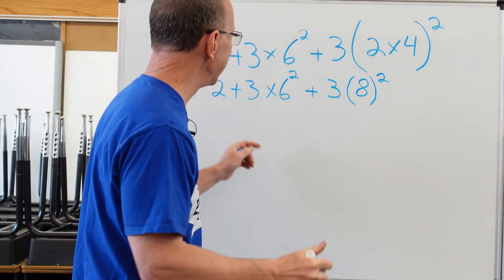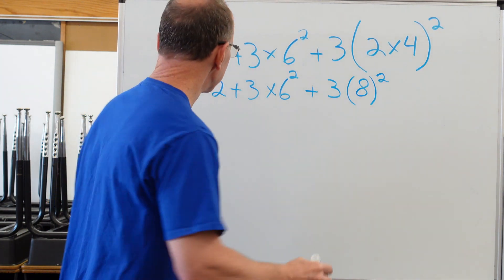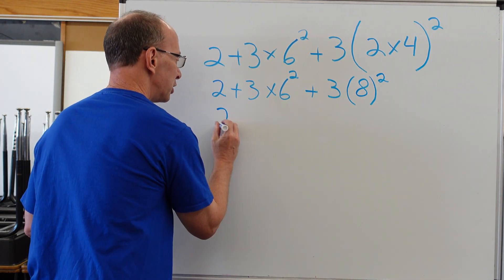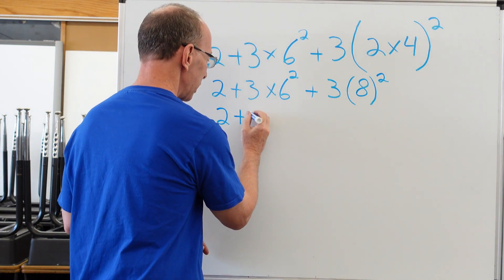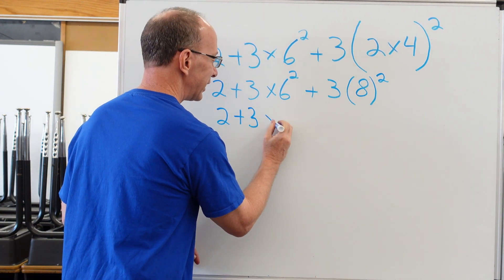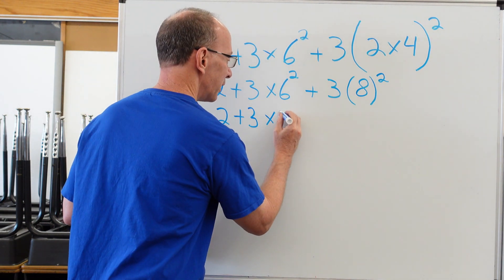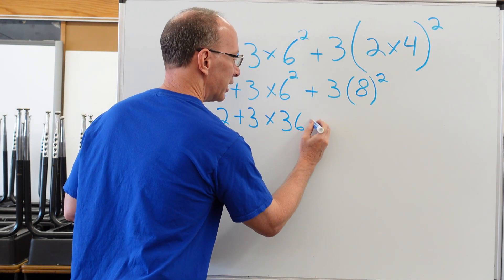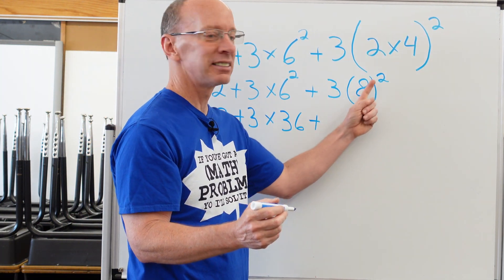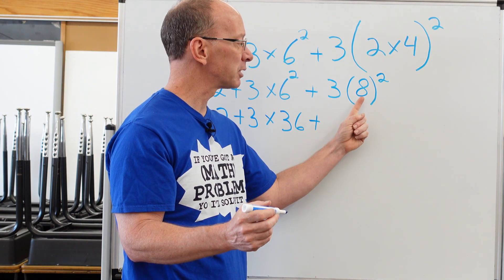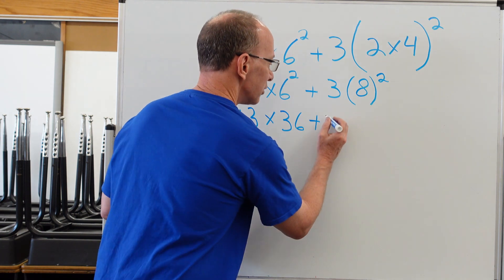We already figured out all of our stuff with the parentheses. Now we do the exponents. I have an exponent here and one over there. So let's rewrite it: 2 + 3 × 6². What is it? Six times six is 36. Plus 3 × 8². We're going to do this exponent: eight to the second power is eight times eight, which is 64.